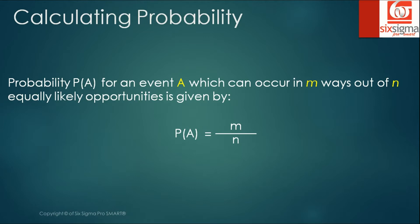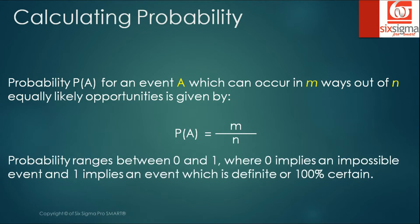Important things to remember while talking about probability are that it always ranges between zero and one, where zero implies an impossible event and one implies an event which is definite or is 100% certain.